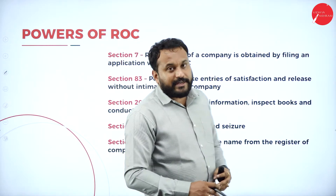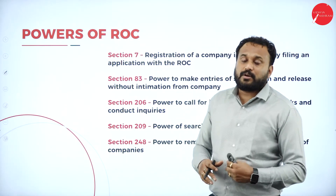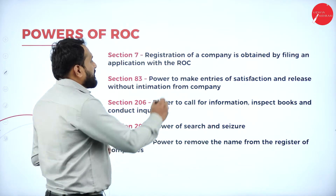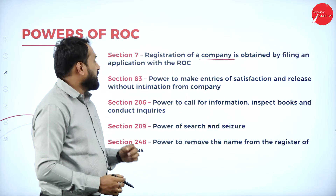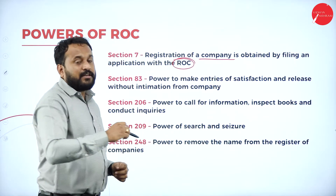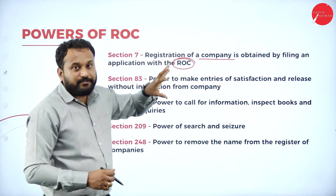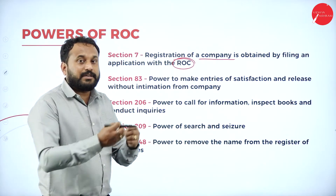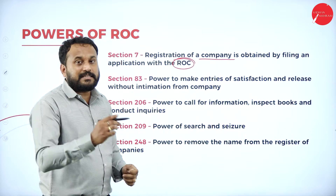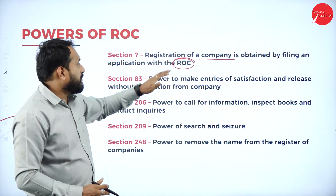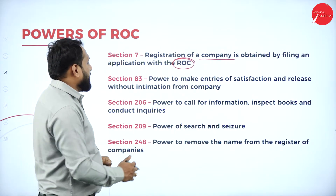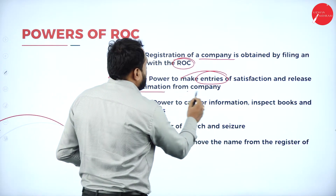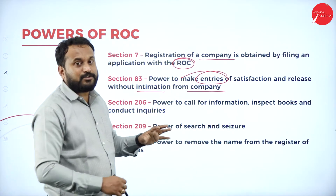Now for the powers of the ROC. The first power is registration of companies: registration is obtained by filing an application with the ROC. Only when you submit your application and get it signed by the ROC can you start a company. The second power is the power to make entries of satisfaction and release without intimation from the companies — meaning the ROC can make entries and release documents without needing to inform any company first.